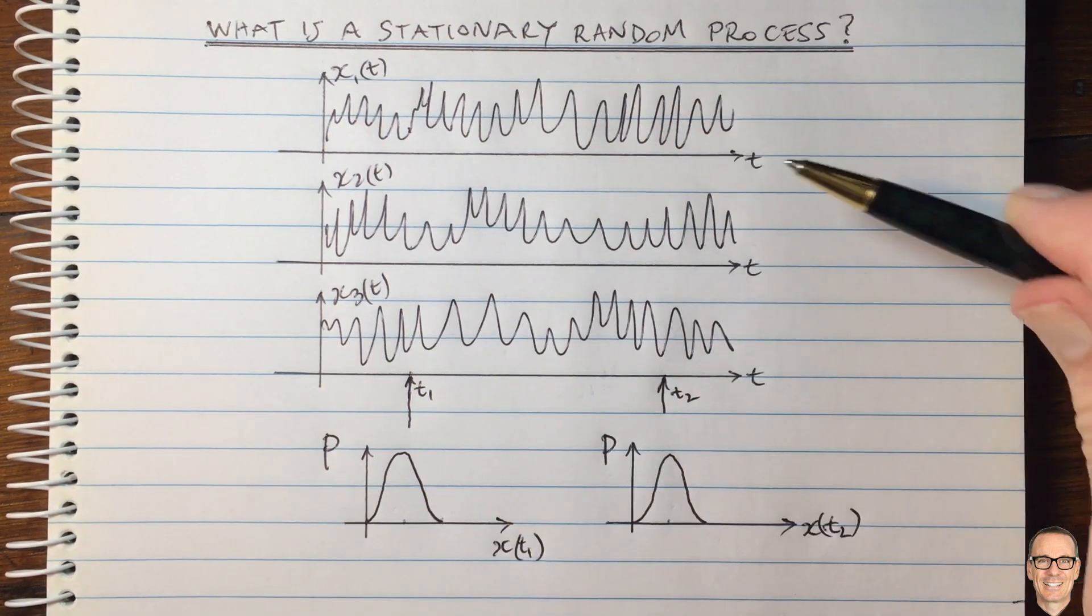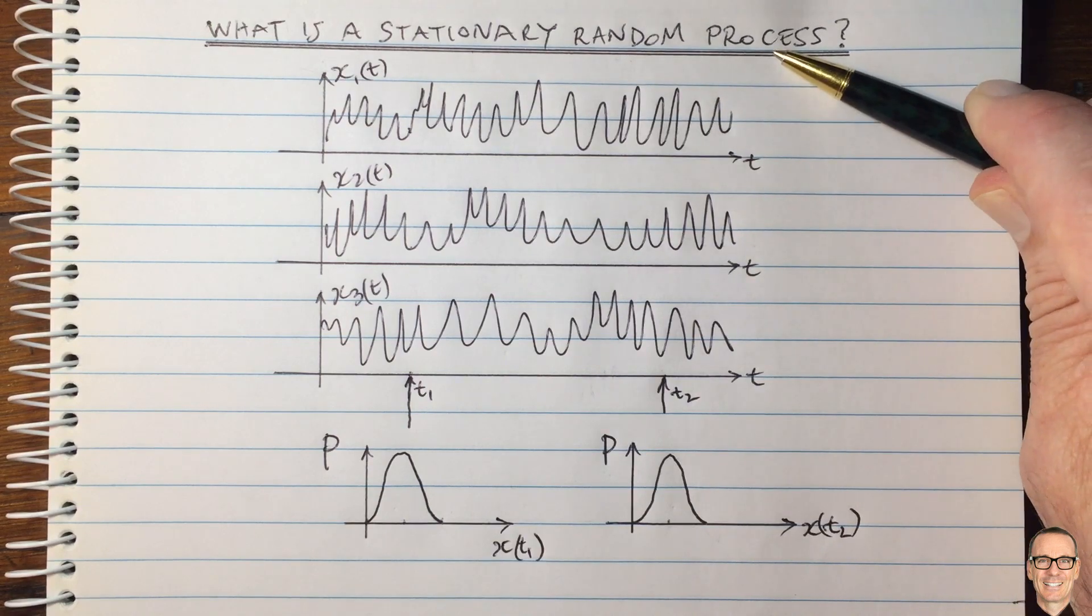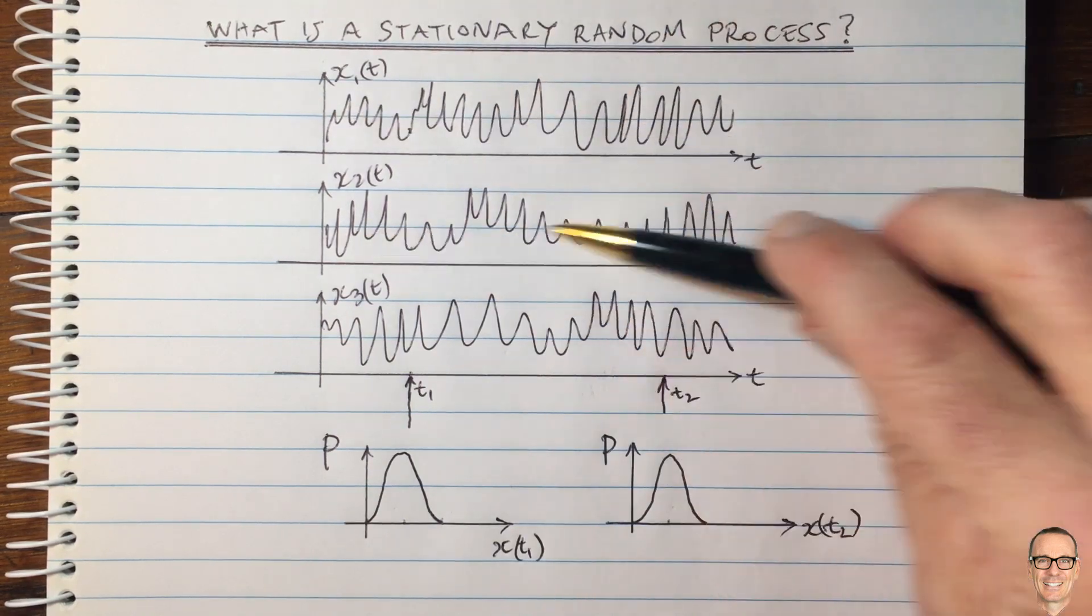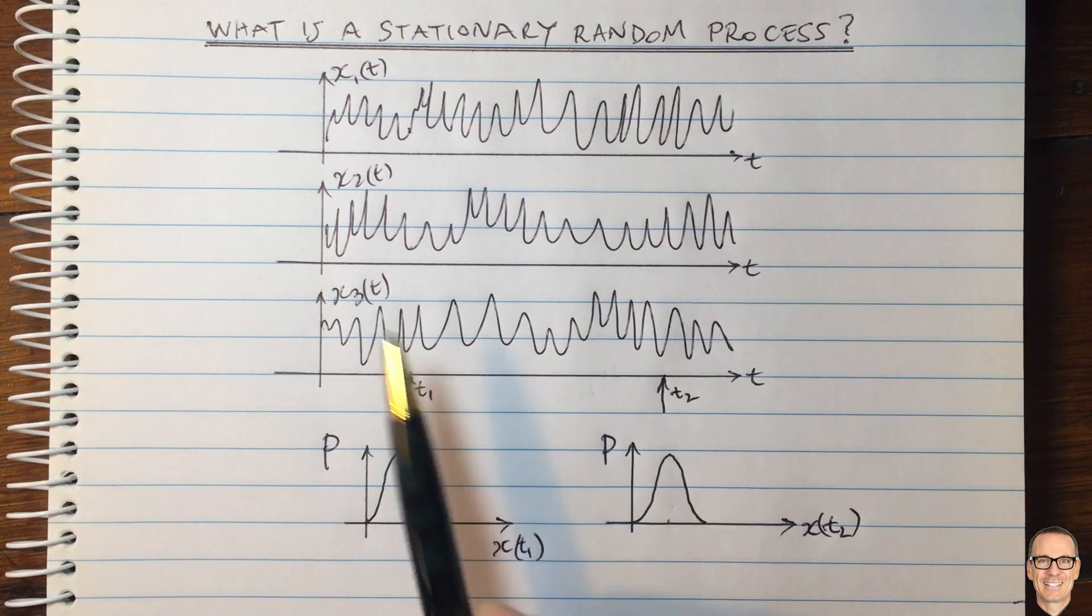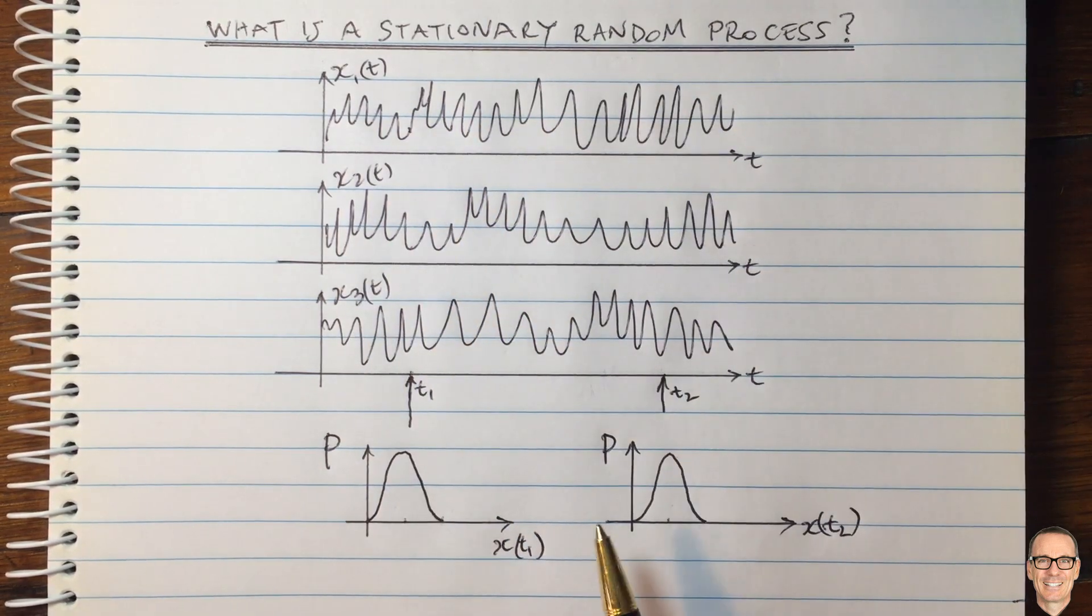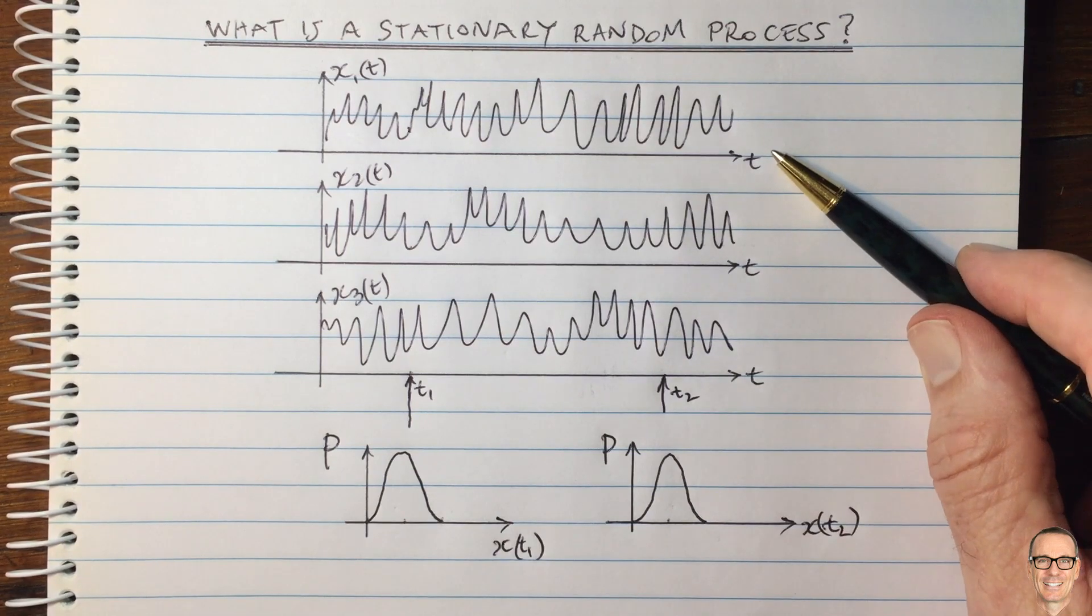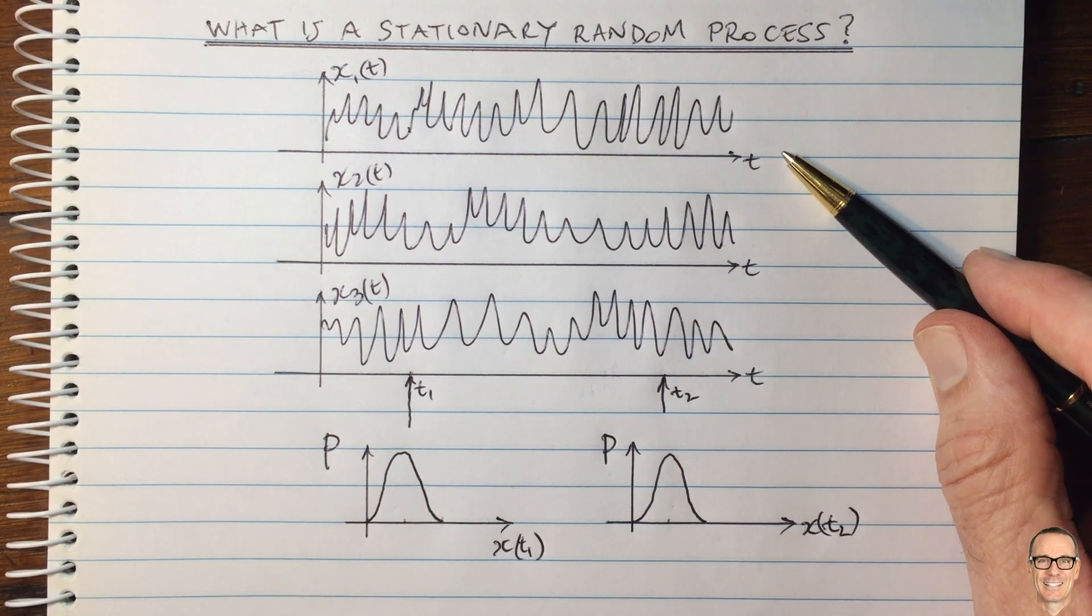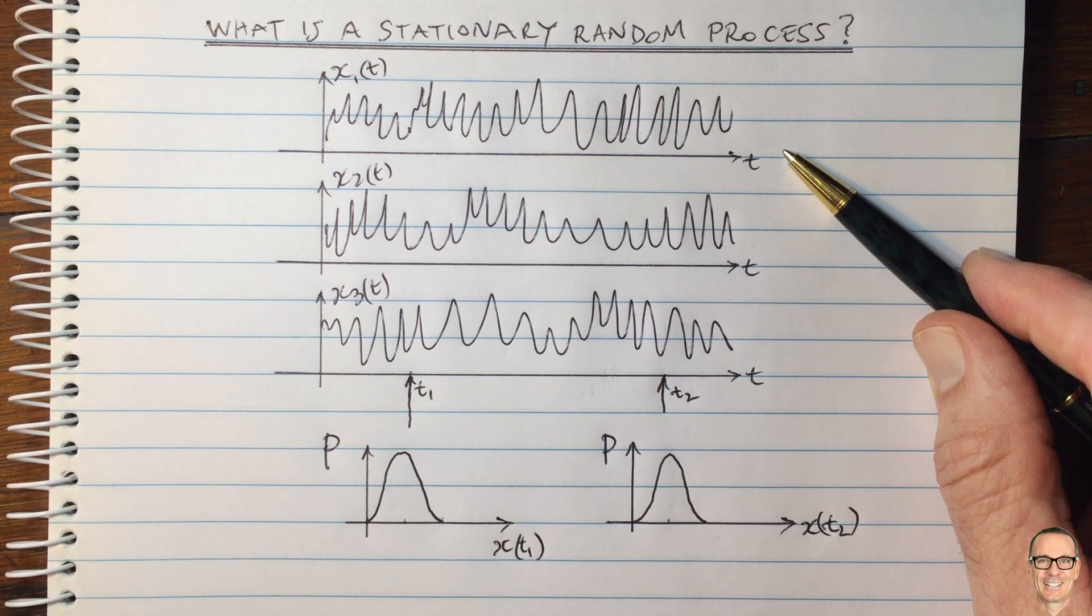So hopefully this has helped to understand a bit more about random processes, in particular about realizations of random processes, and the values at given times being random variables. If it has helped, give the video a thumbs up. It helps others to find the video. Check out the webpage in the description below, where you'll find a full categorized listing of all the videos on the channel.